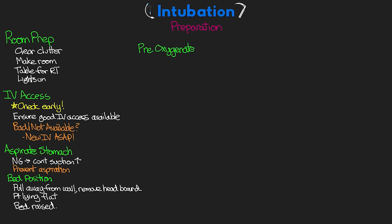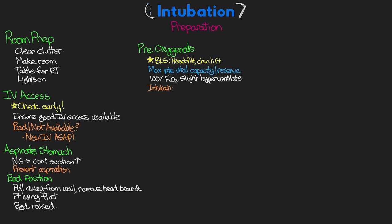From here in preparation we want to pre-oxygenate the patient. When ventilating with the bag valve mask, keep in mind your BLS — head-tilt chin-lift to ensure a good open airway, unless there are neck injury limitations. We want to max out the patient's vital capacity and oxygen reserve as best we can by delivering 100% FiO2 through the bag valve mask, and we may slightly hyperventilate them as well. During the intubation attempt the patient will receive no oxygenation or ventilation, so filling up their reserve buys us more time for a successful intubation.